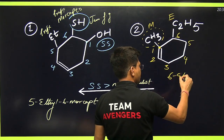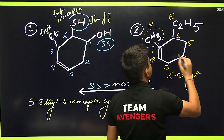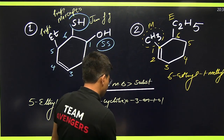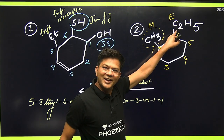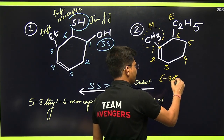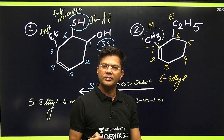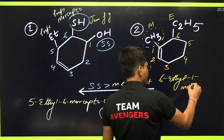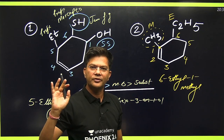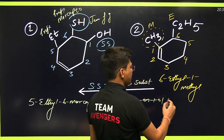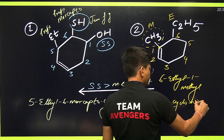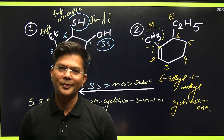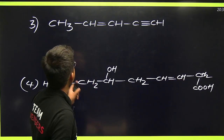So how will you call it? This is methyl starting with M, this is ethyl starting with E. So alphabetically, E comes first: 6-ethyl. Then 1-methyl. The first letter must be capital, all letters after that will be small: 6-Ethyl-1-methyl-cyclohex-1-ene. I think this is clearly visible to all of you.